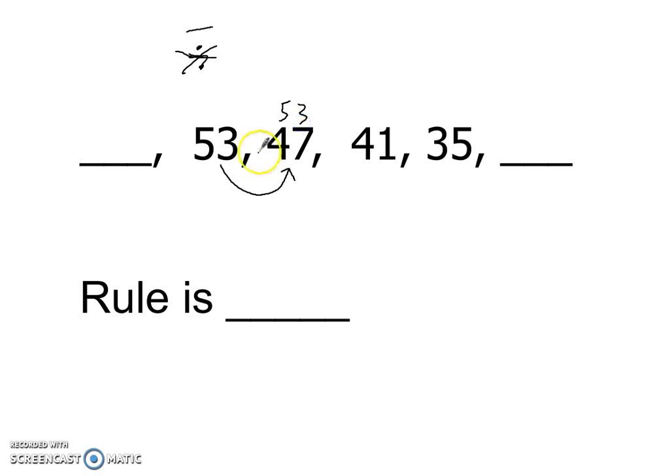So I know I'm subtracting. So then I need to figure out how much I'm subtracting. So 53 minus 47. I got a 6. So this is a minus 6. Double check that 47 minus 41 is also 6. It is.